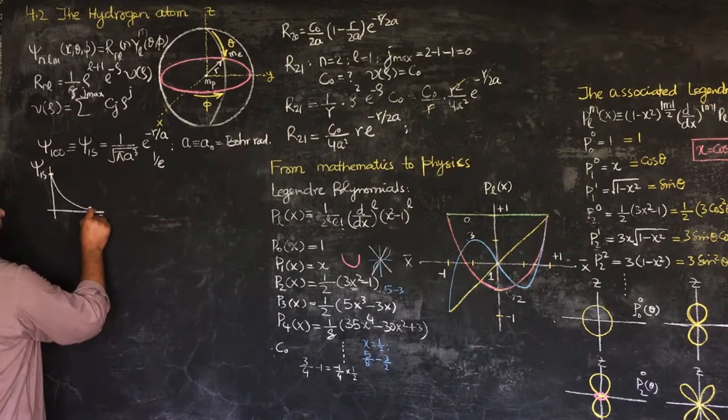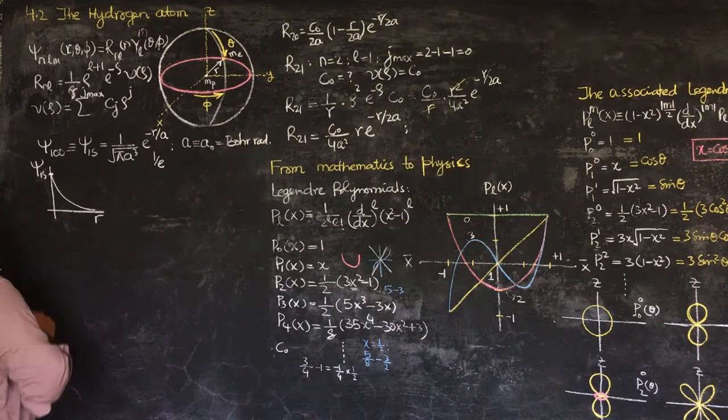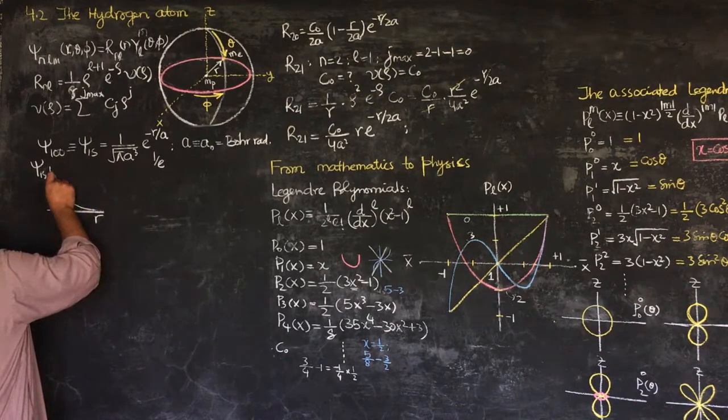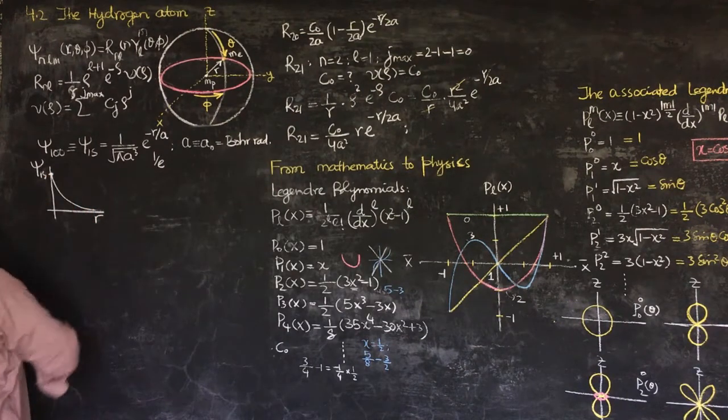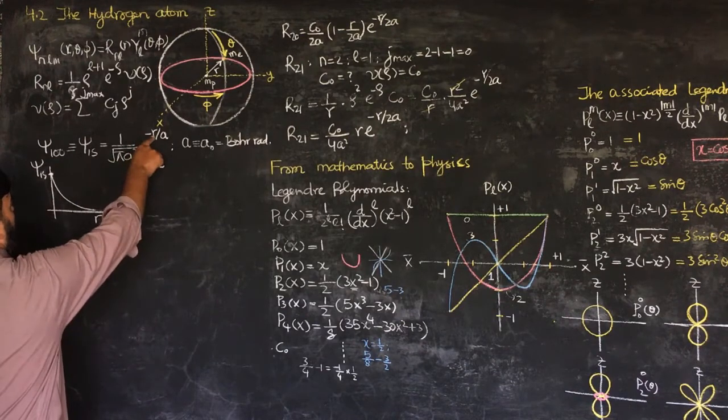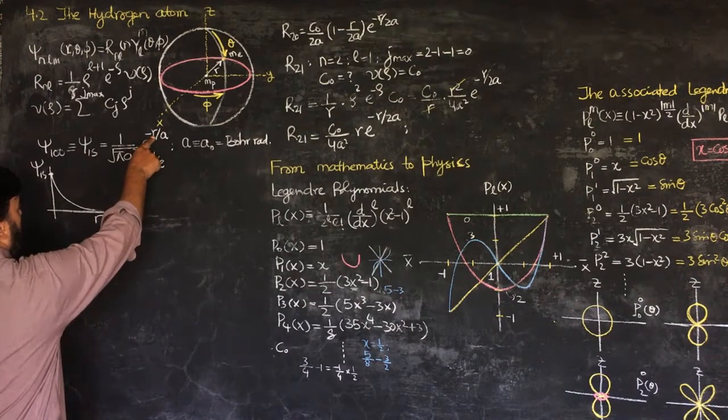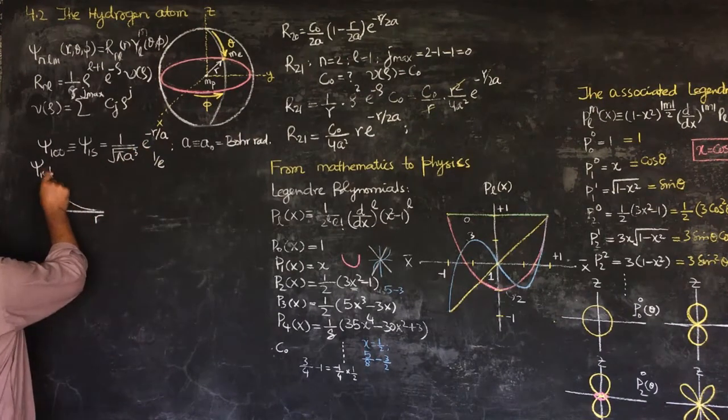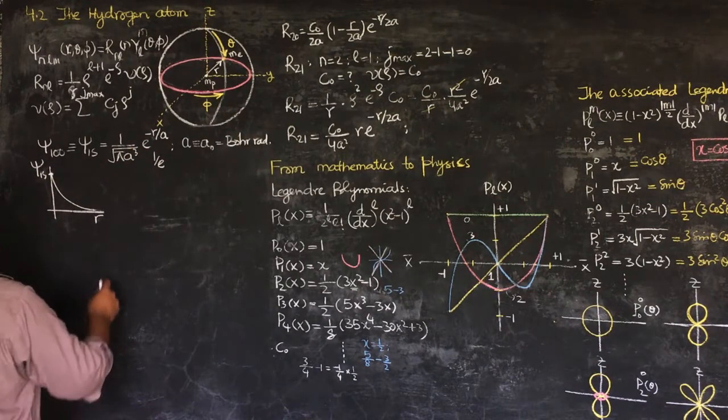So it will be extending like this, will not be touching here. And it is very close here, R equal to 0. When R is 0, then we are having e to the power 0, it is 1 and it will be this value.